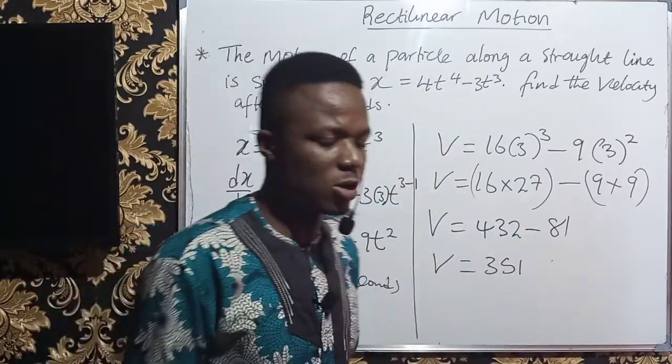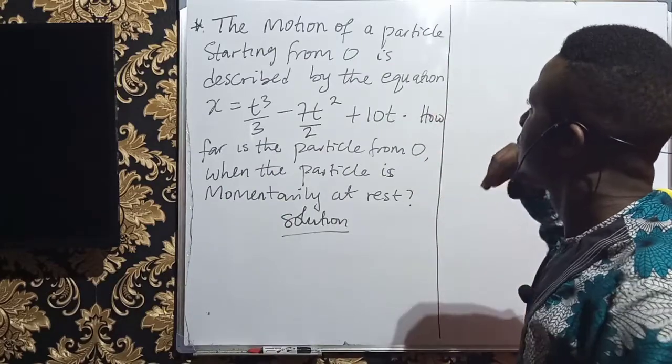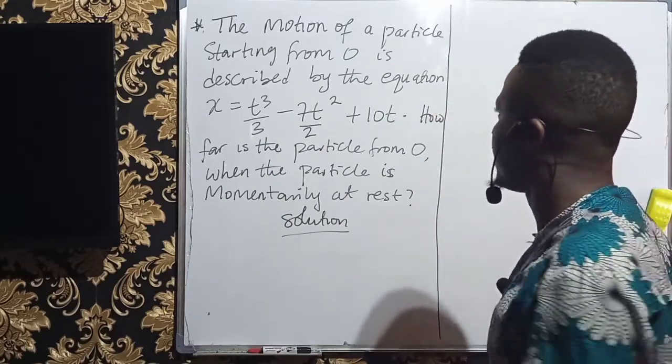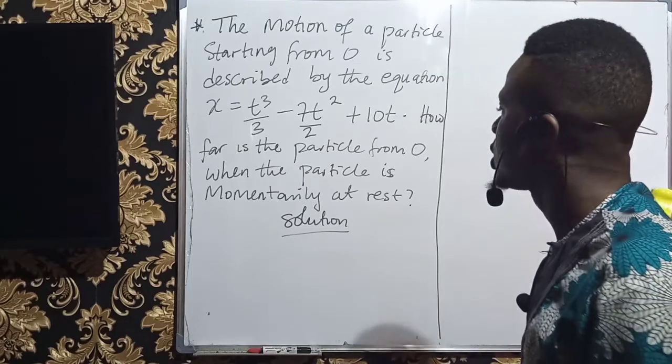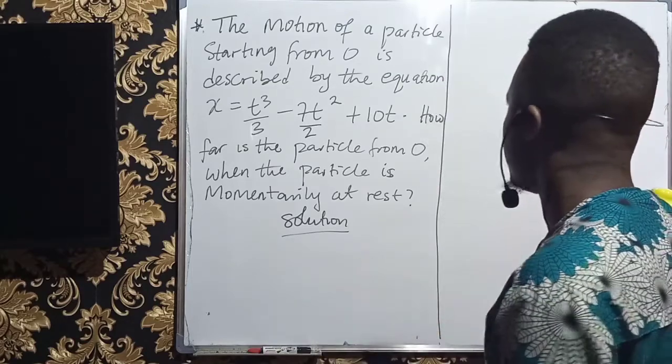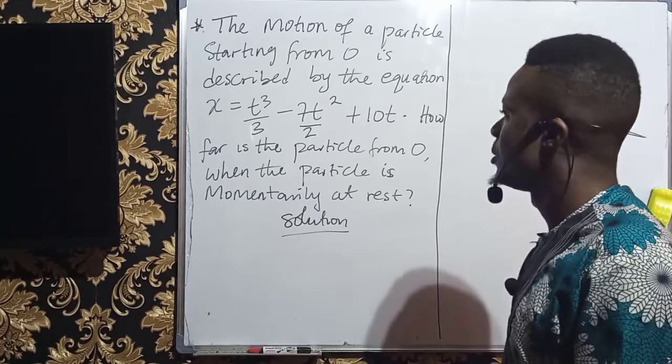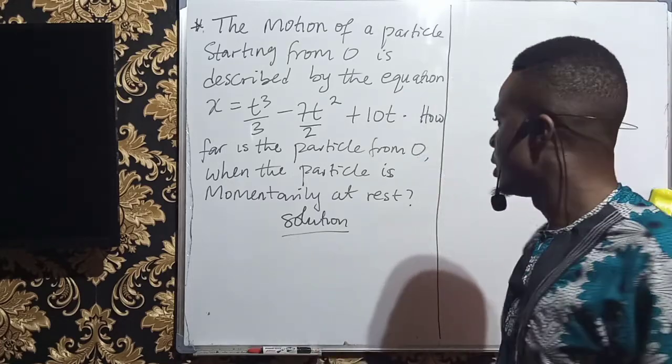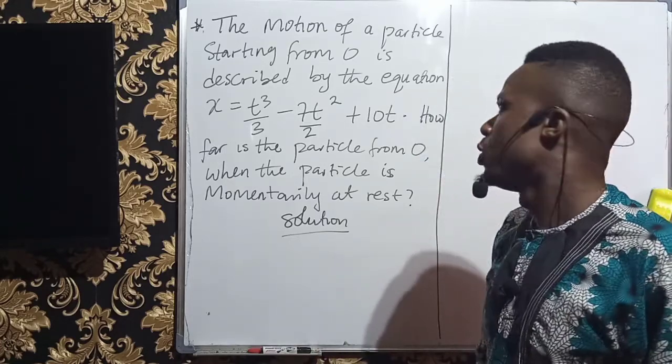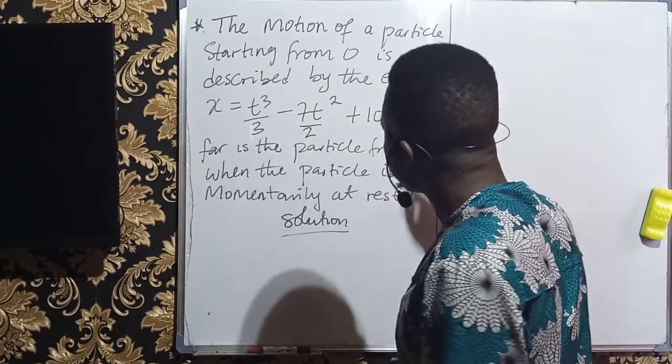So let's take a second equation. The motion of a particle starting from O is described by the equation x equals t cubed over 3 minus 7 over 2t squared plus 10t. How far is the particle from O when the particle is momentarily at rest?